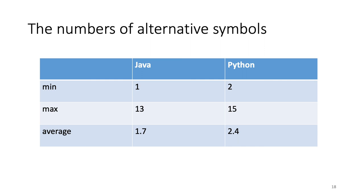This chart shows the results for Python. 44% of rules can be reduced without lakes on average, and 89% of rules can be reduced with lake symbols on average. The results indicate that lake symbols are necessary to effectively reduce the number of rules for Python. To confirm the effectiveness of lake symbols, we also measured the number of alternative symbols calculated for each lake symbol. In the case of Java, 1 to 13 alternative symbols are calculated, and 1.7 symbols on average. In the case of Python, 2 to 15 alternative symbols are calculated, and 2.4 symbols on average. Because finding all 13 or 15 alternative symbols by hand is tedious and error-prone, we think lake symbols are useful for writing island grammars.